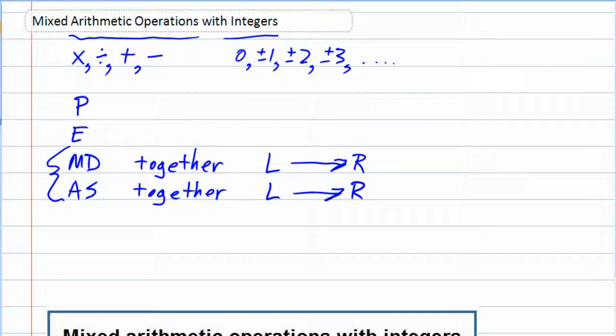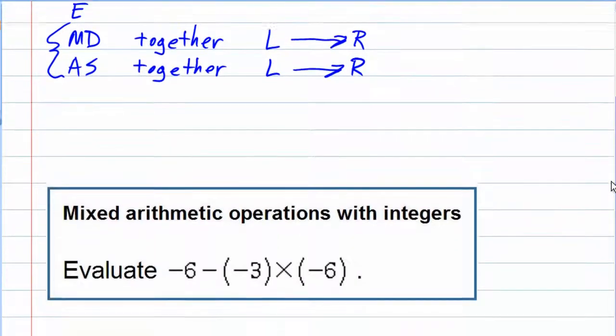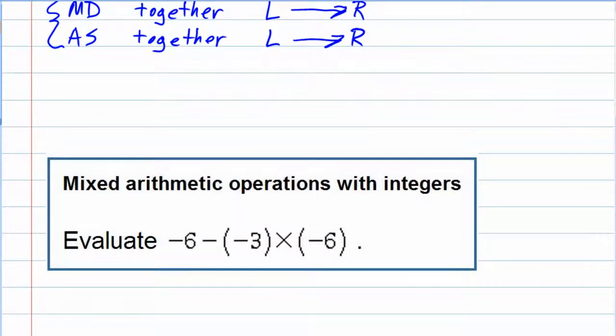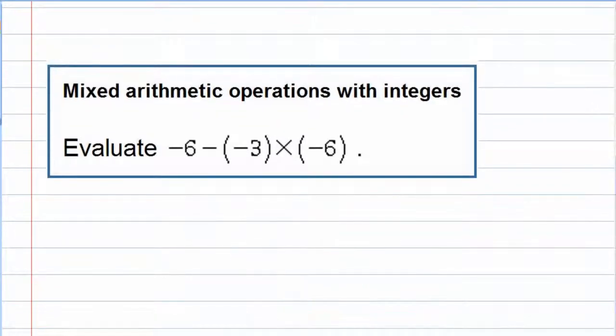Okay, so let's take a look at our example. And our example is we're asked to evaluate negative six minus negative three times negative six. So back to our multiplication and division getting done first, and then addition and subtraction. I'm looking for my operators, and I see two of them there. I see subtraction, and I also see multiplication. So that being the case, multiplication and division gets done first.